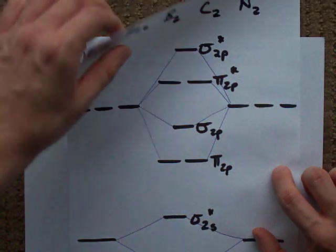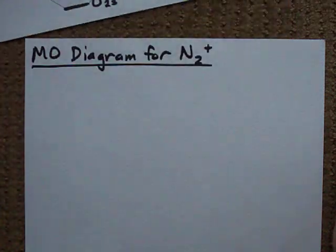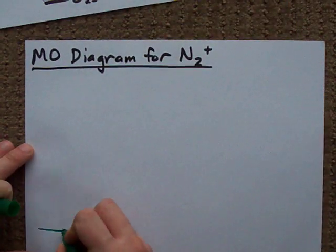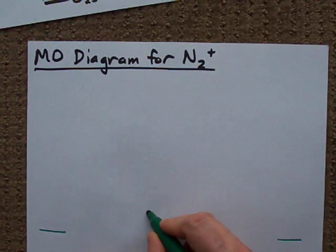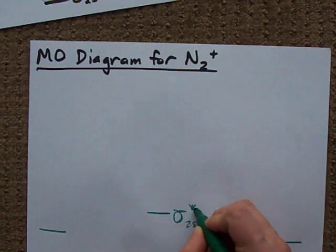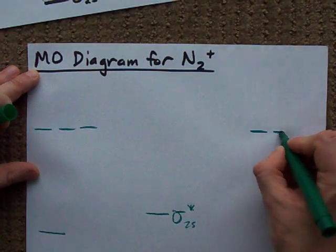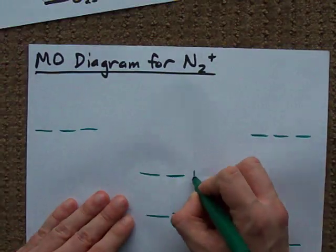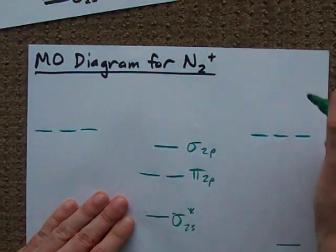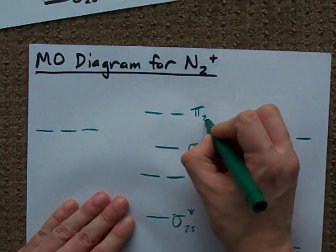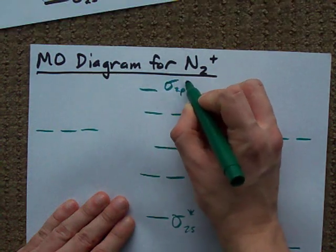So if you're asked for the MO diagram for N2+, you're basically going to regurgitate this diagram. The two 2s orbitals come together to form a sigma2s and a sigma2s antibonding. My two p's come together to form a pi2p and a sigma2p, and we need corresponding pi2p antibonding and sigma2p antibonding.